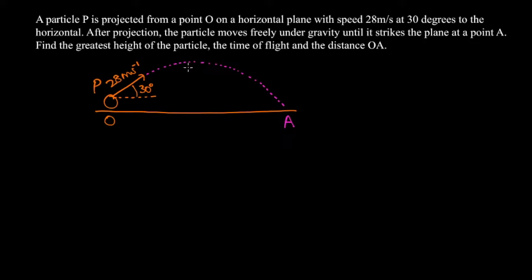The first thing we're going to try and find is the maximum height of the particle P. Because we're trying to find a height, which is a vertical distance, we're going to use SUVAT in the vertical direction. We're trying to find the vertical displacement, so we're going to put a question mark below s. The initial speed in the vertical direction is this component here. If we draw a right-angle triangle, the component we're looking for is opposite to the angle 30 degrees, so that means the component we're looking for is 28 sine 30.